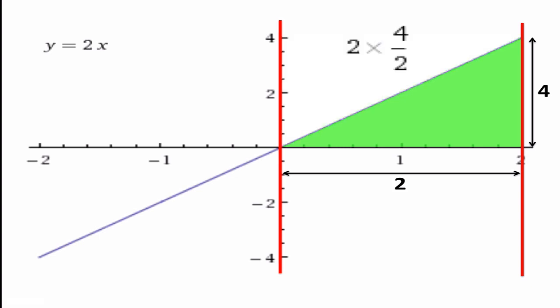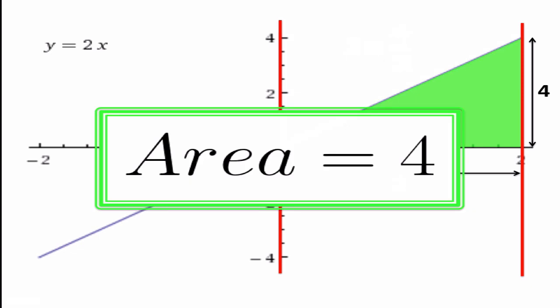Thus, the area of this triangle, and thus the area beneath the line, is 2 times 4 divided by 2, which is 4. Now, we are going to move on to explicit algebraic integration.